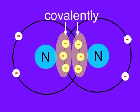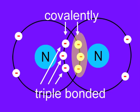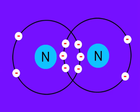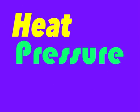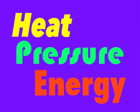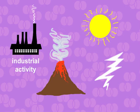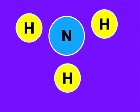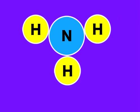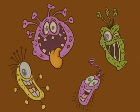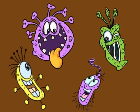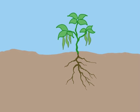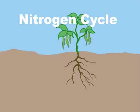Nitrogen gas in the atmosphere is covalently triple-bonded, which means it's hard to break apart and use. It takes heat, pressure, and energy to do this. Industrial activity, sunlight, volcanic eruptions, and lightning strikes do some of the nitrogen fixing, but most of it occurs far underground with the aid of special bacteria.